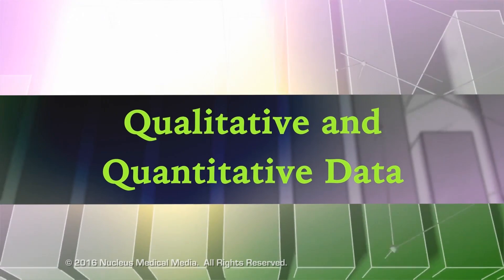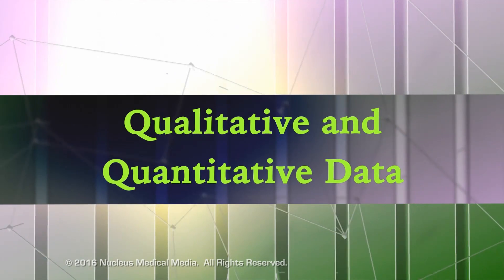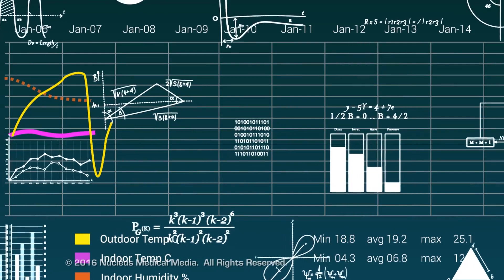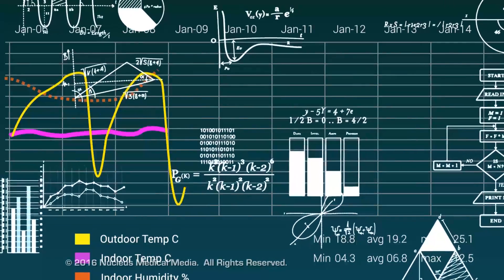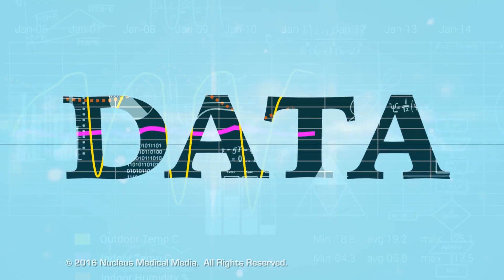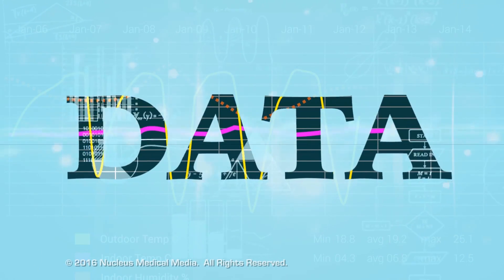Let's look at the difference between qualitative and quantitative data. Scientists observe and collect different types of information called data. So what kind of data can we collect?